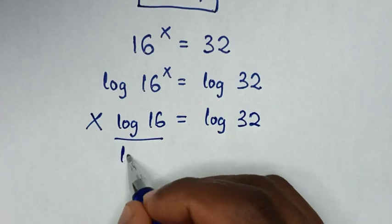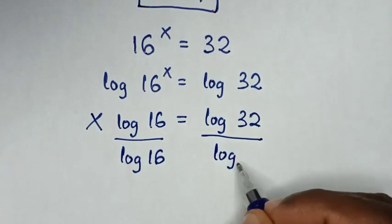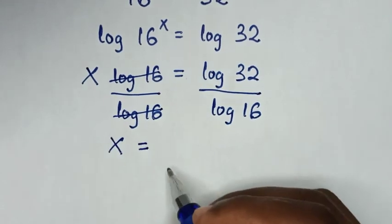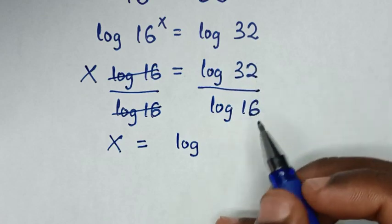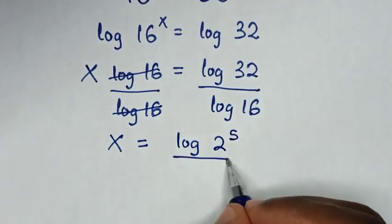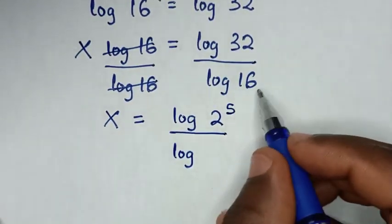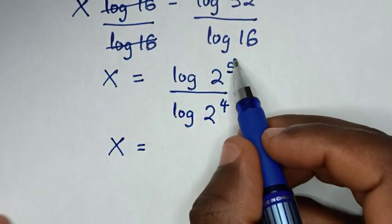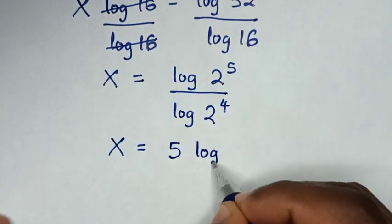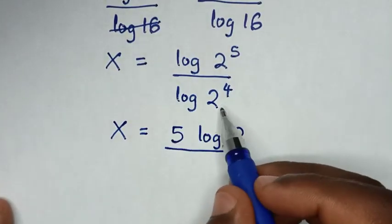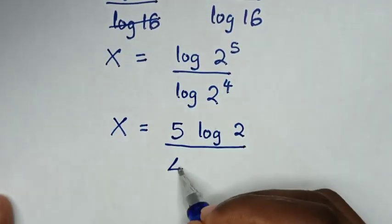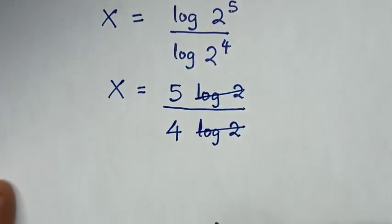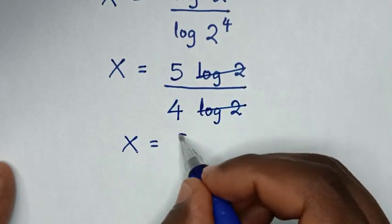Then we divide by log of 16 on both sides. This and this will cancel, then it will be x is equal to log of 32 over log of 16. Now, 32 is same as 2 power of 5, and 16 is same as 2 power of 4. So this power of 5 will move to the front giving 5 log of 2, and this power of 4 will move to the front giving 4 log of 2. Then log of 2 will cancel with log of 2, so it will be x is equal to 5 over 4.